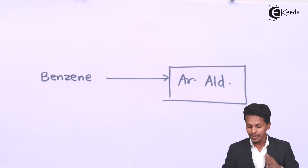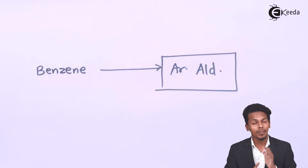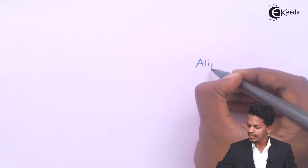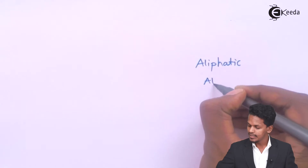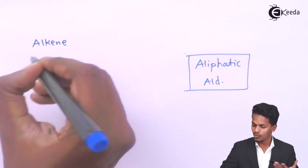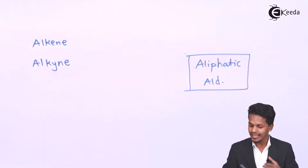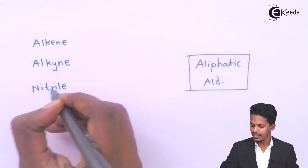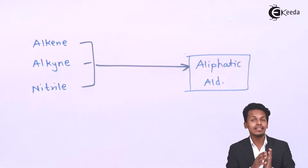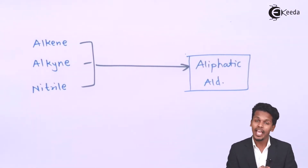Aromatic aldehydes can be prepared either by the methods already mentioned or from benzene directly. But if we need to prepare only aliphatic aldehydes specifically, those can be prepared by using alkenes or unsaturated hydrocarbons, or by reaction with alkynes as well as nitriles.